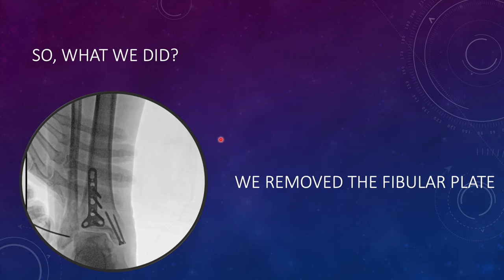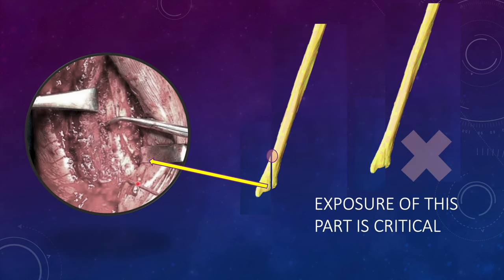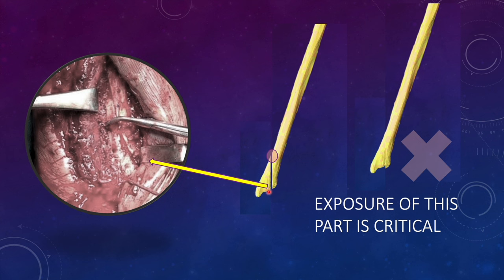For the revision, we first removed the fibular plate, then placed a joystick wire in the distal fragment to gain length. The critical step was to expose the terminal fracture area, which is often covered by soft tissue and ligamentous attachments and therefore not visualized. In fractures with tendency for shortening due to unstable patterns, this part must be exposed. We did the same — upon exposing the terminal part, we found a small void due to comminution, and the small fragment seen on the previous CT was lying elsewhere. Under direct vision we reduced the fibula, matching the surfaces.